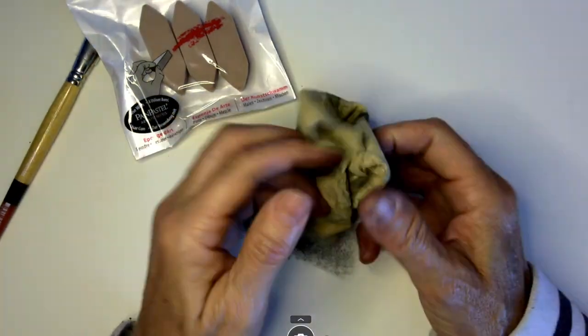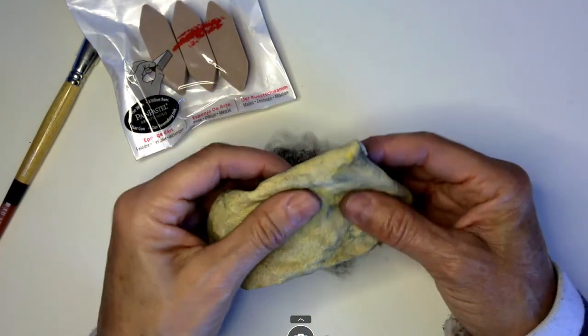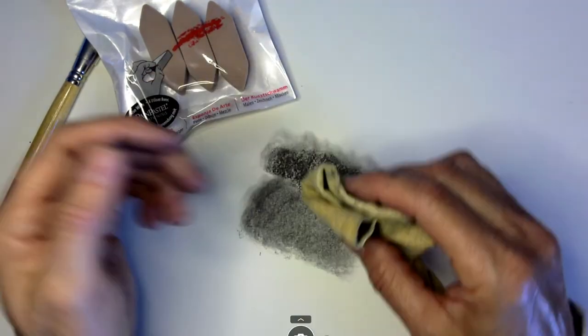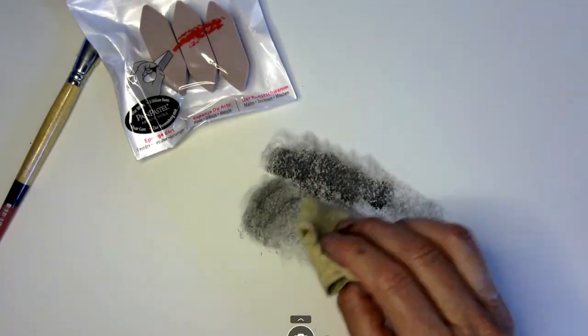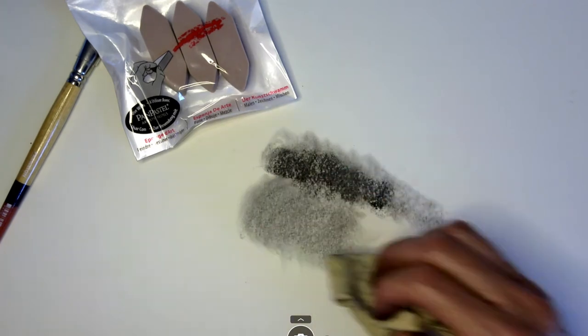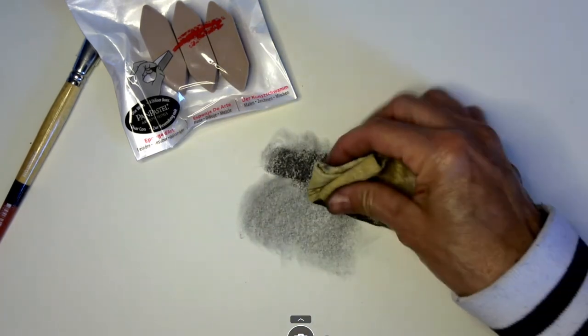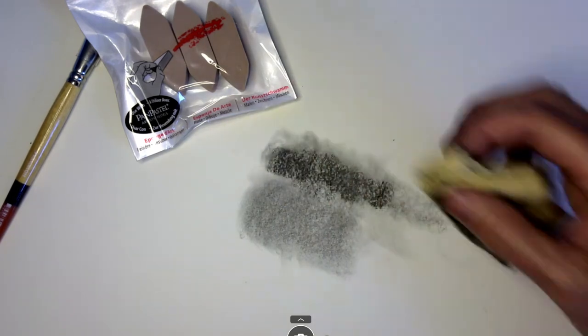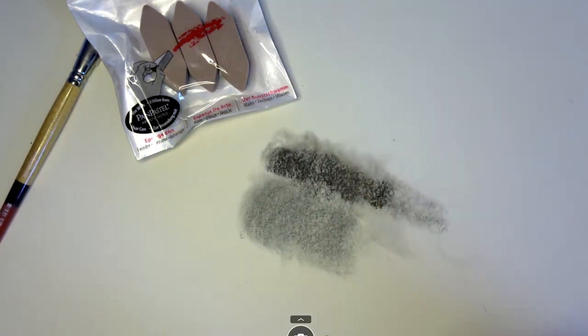I can also use another accessory called the chamois cloth. This is just a very soft piece of leather. Look what happens when I wipe it along the top—it wipes it away a little more. With the same pressure, you can see that compressed charcoal is more of a commitment.